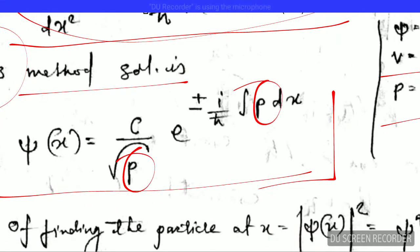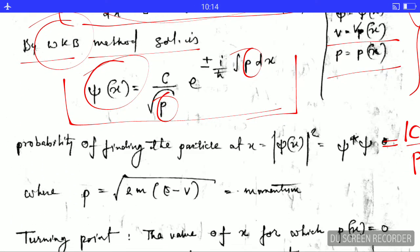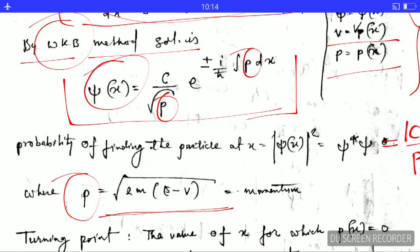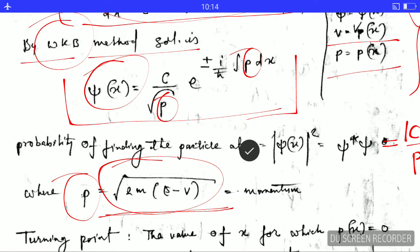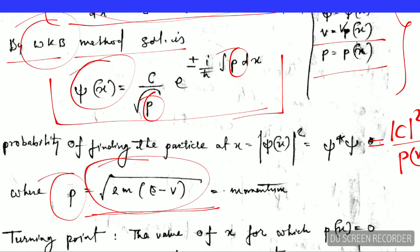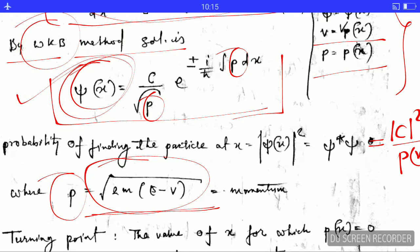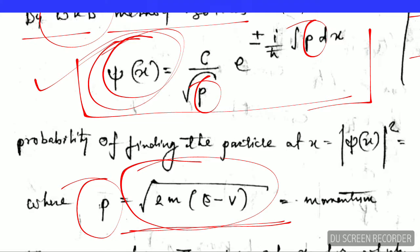In this equation, you simply plug in the value of p and solve — you will get the WKB solution. The value of p is given by this equation. p is nothing but the momentum; you can verify that this quantity has the dimension of momentum. Plugging p into the WKB solution gives the approximate solution of the Schrödinger wave equation.